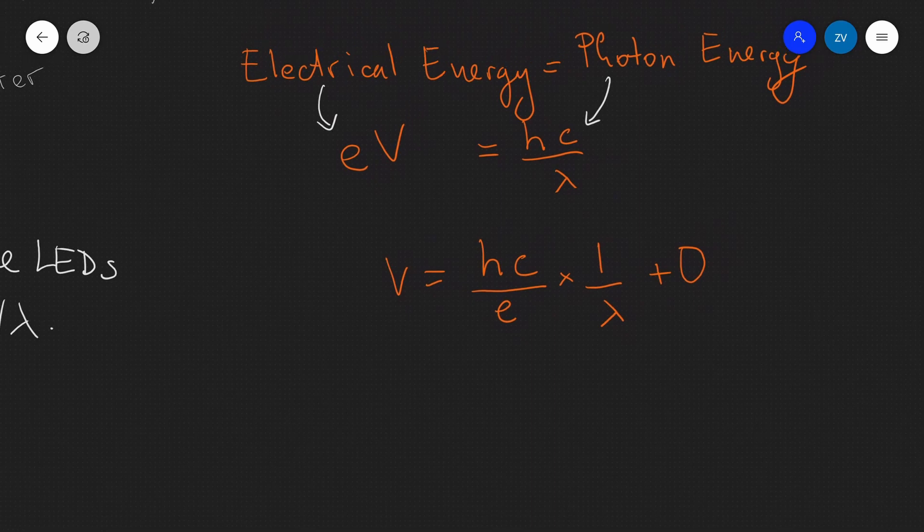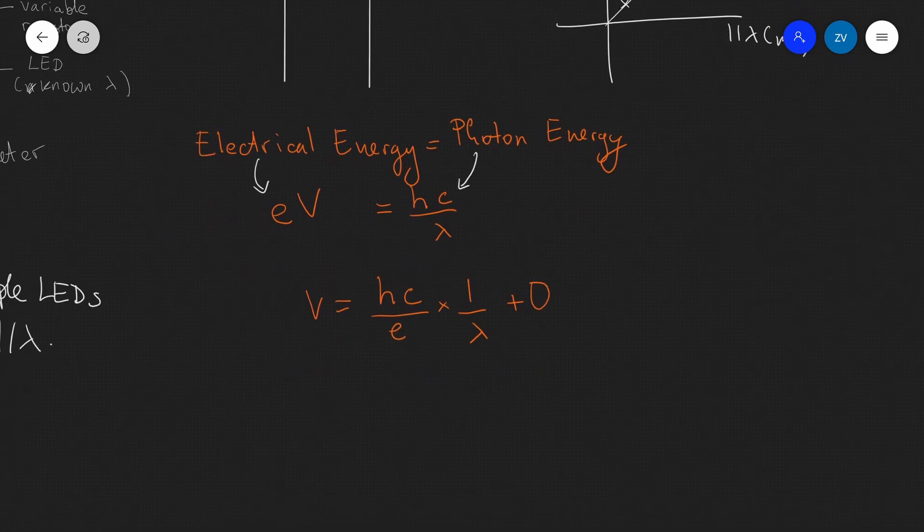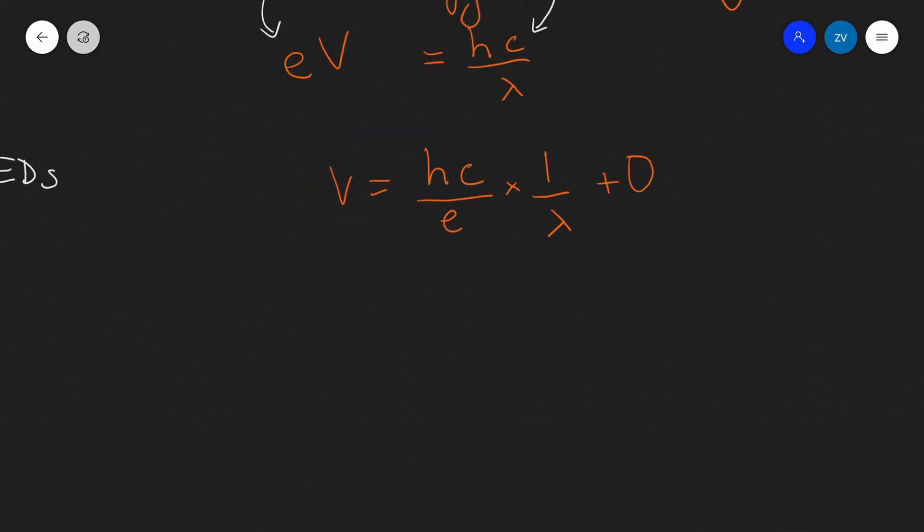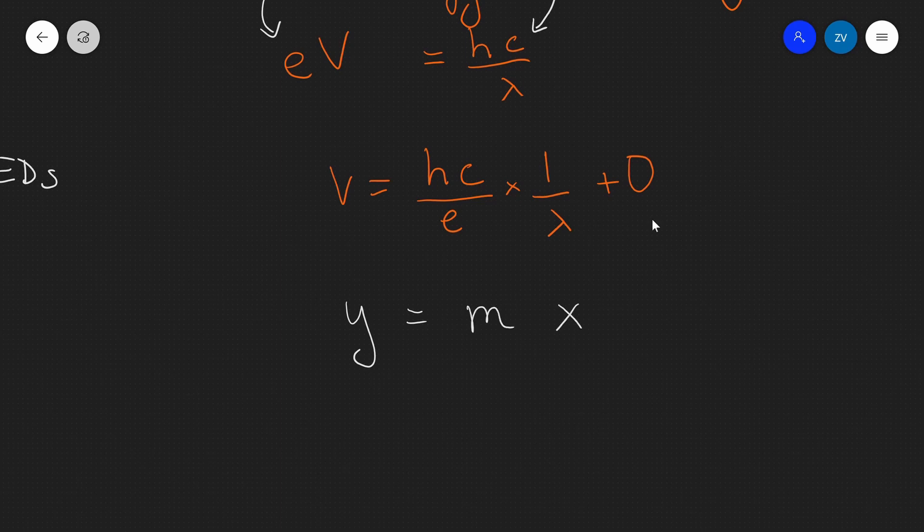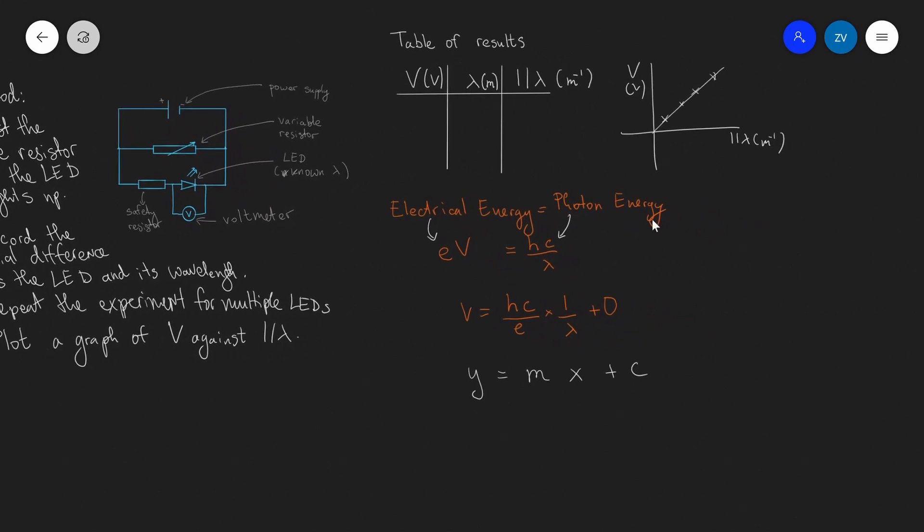Now, if we have a graph of v against 1 over lambda, well, if that's the case, we could use linear analysis. So, what I'm going to do is write over here that y is equal to mx plus c. Now, we can see that v is on the y-axis, like so. We also can see that 1 over lambda is on the x-axis. We can also see that c is 0, no pun intended. And what's left for our gradient, I'm going to use my rainbow pen for this, is hc over e.